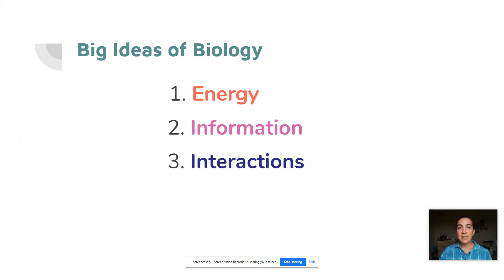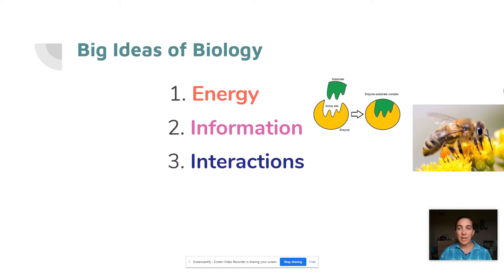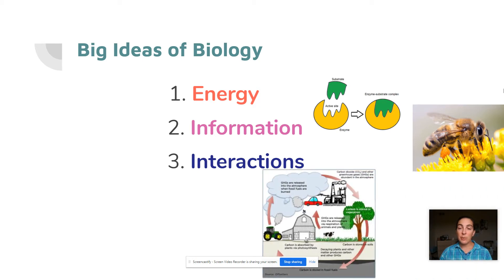The third big idea in biology is interactions, and again this spans all different levels. We can talk about molecular interactions like the interaction between an enzyme and its substrate, which is really important in chemical reactions. We can talk about interactions between different organisms, like a bee pollinating a flower. And we can talk about interactions on a global scale, such as how humans interact with the environment to change things throughout the atmosphere, the biosphere, and all the different levels.